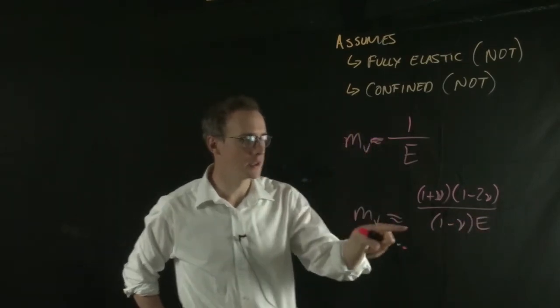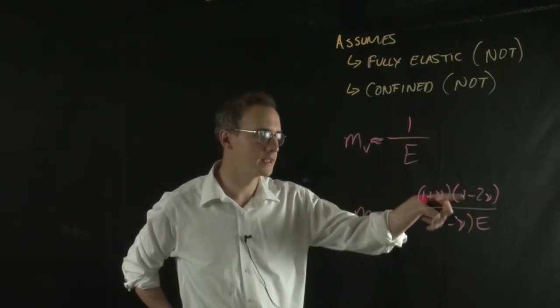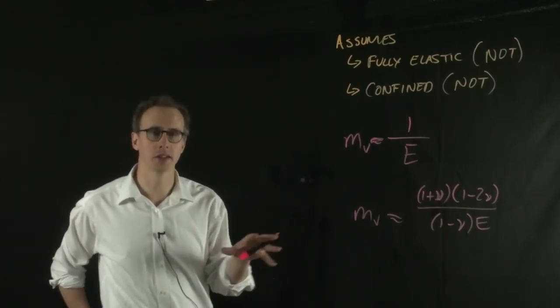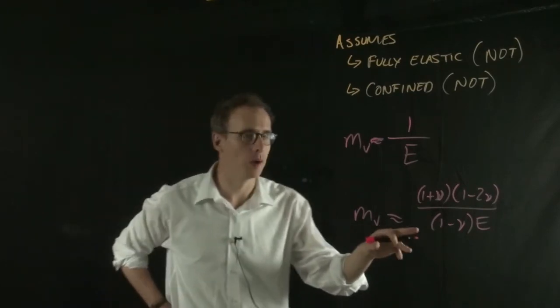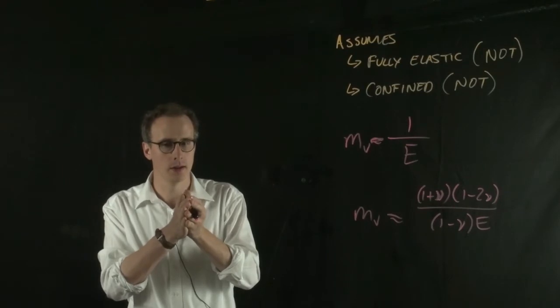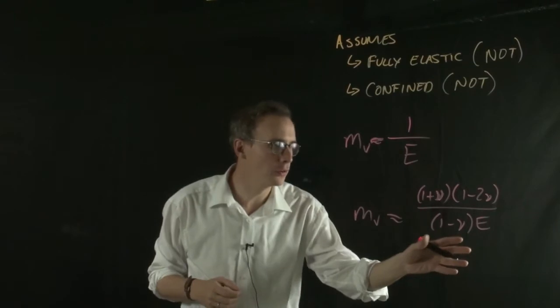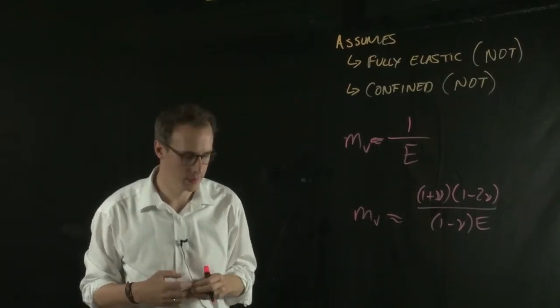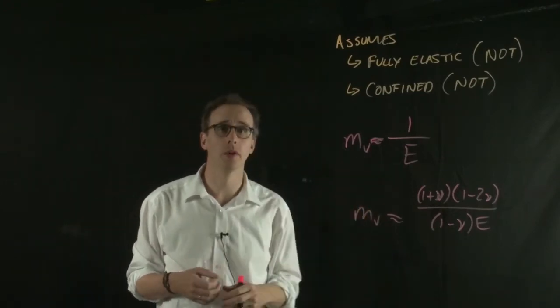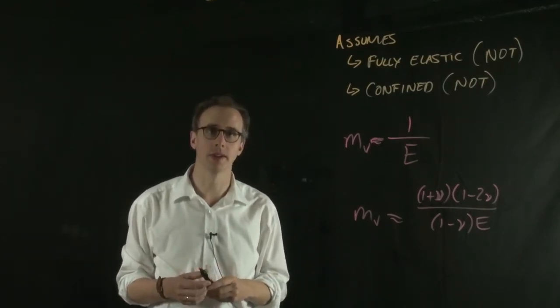There's an inverse relationship with Young's modulus here, but there's a factor of Poisson's ratio. I've put a link to an explanation of what Poisson's ratio is. Essentially, it's how the material deflects out as you're loading it. In an unconfined case, this situation happens. Your MV value actually changes depending on whether you're looking at a confined or an unconfined case. What that means in terms of total settlement is something like this.